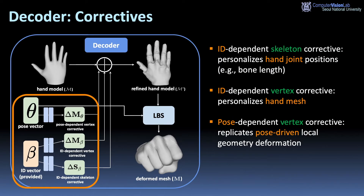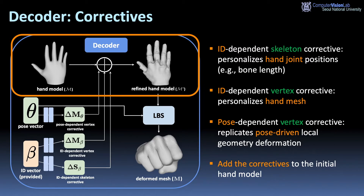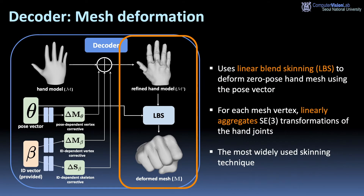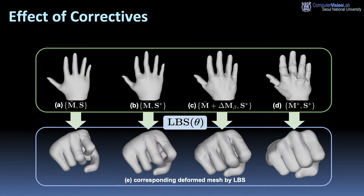There are three types of correctives: ID-dependent skeleton corrective, ID-dependent vertex corrective, and pose-dependent vertex corrective. The estimated correctives are added to the initial hand model. We use linear blend skinning to deform the zero-pose hand mesh using the pose vector. For each mesh vertex, it linearly combines the transformations of the hand joints.